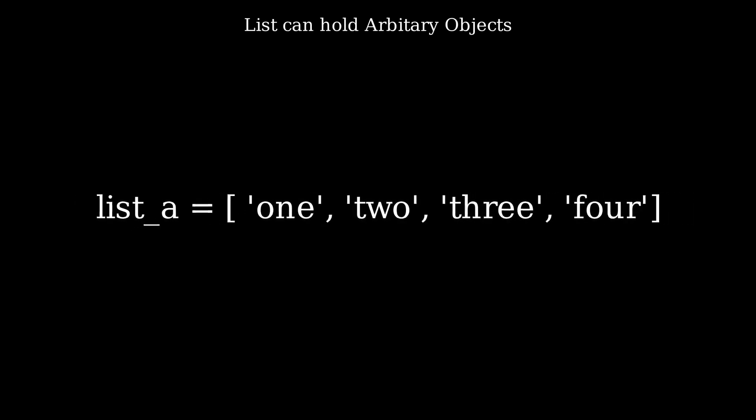List is a collection of different objects similar to an array in other programming languages. Lists are defined in Python by enclosing a comma-separated sequence of objects in square brackets.